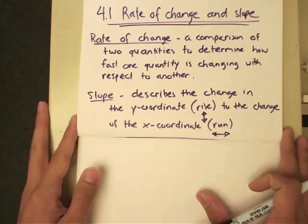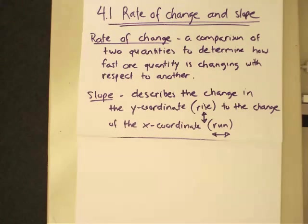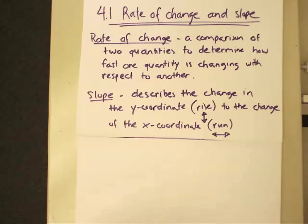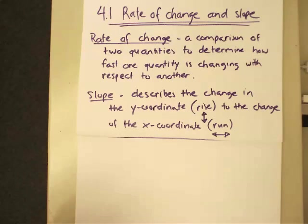I'll talk to you about the rate of change and slope today. One particular outcome I'm looking for is the ability to examine change — to see how fast something is increasing or decreasing — and be able to put an actual numerical value to it. That is what the rate of change is all about. Slope is the same way; it's just another way to describe the change, but it applies to a linear function, which is a straight line.